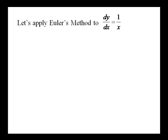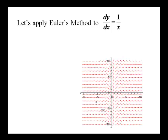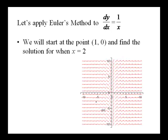In this problem, we're going to apply Euler's method to the differential equation dy/dx equals 1 over x. So here is our general solution, or our slope field. Now we're going to start with the initial condition of (1,0) and find the solution for when x is equal to 2.